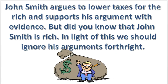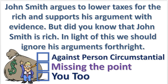Next practice problem. What fallacy is committed in this argument? Press pause — the answer will appear in 3, 2, 1. Argument against the person, circumstantial. The claim is that the rich man is predisposed to argue as he does.